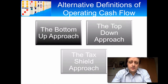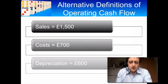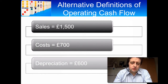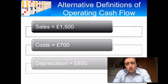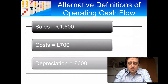All three give you the same operating cash flow. Let's just fire through these. We're going to set up with a very simple cash flow stream. We have sales of 1500, costs of 700, and depreciation is 600. So we're going to calculate the income statement from these figures — sales 1500, costs 700, and depreciation 600.